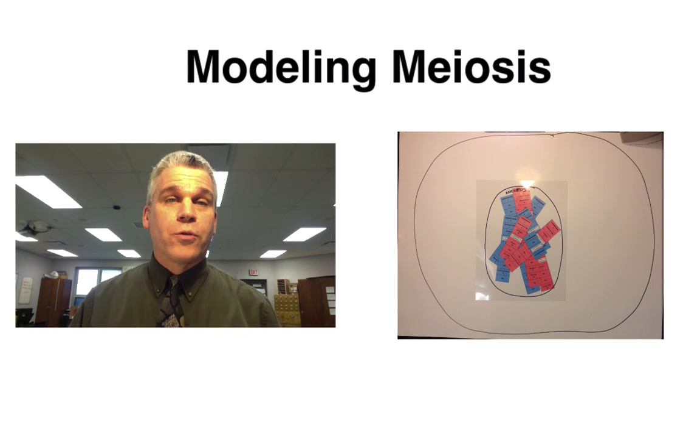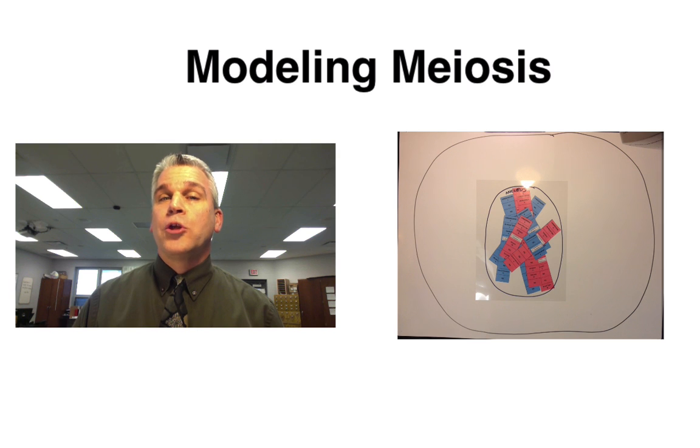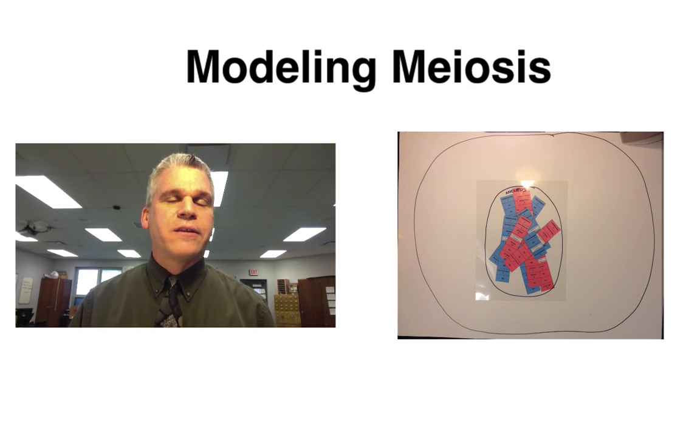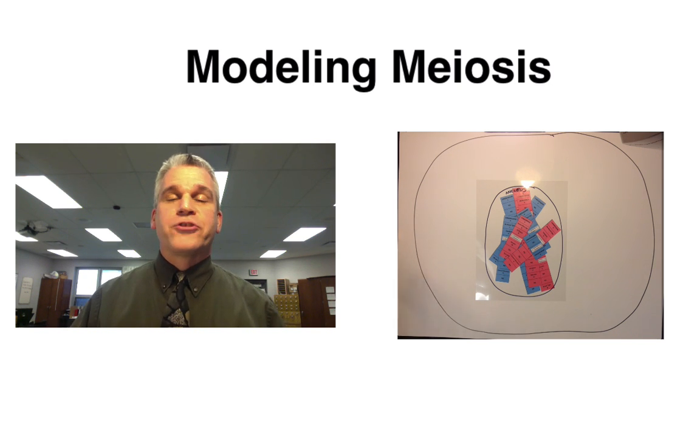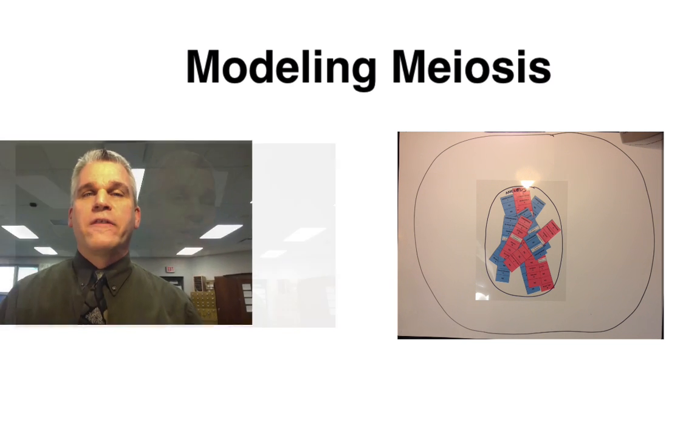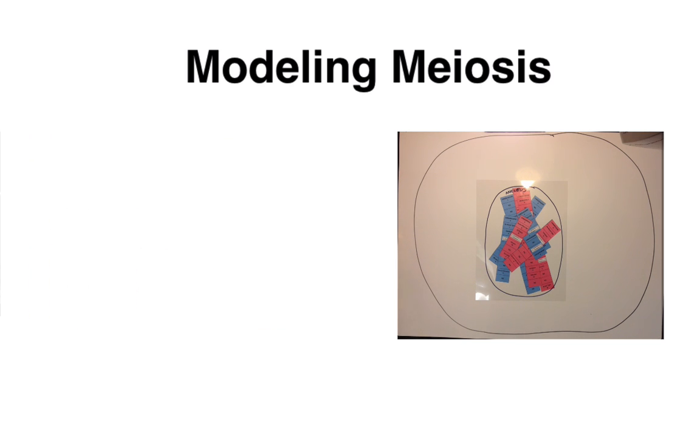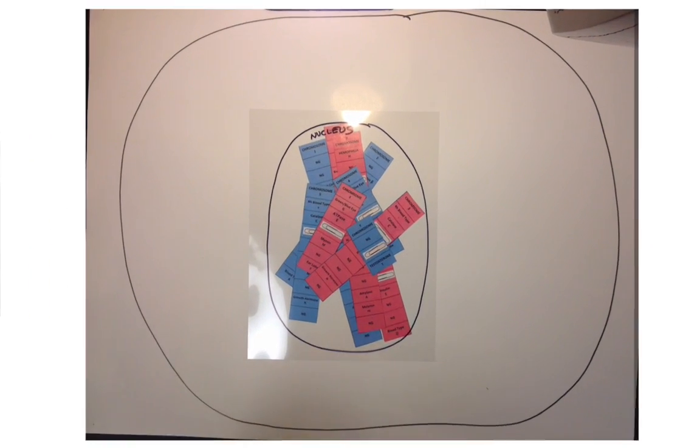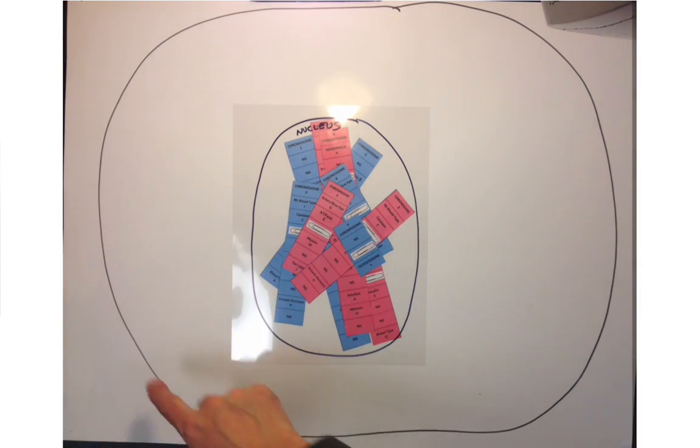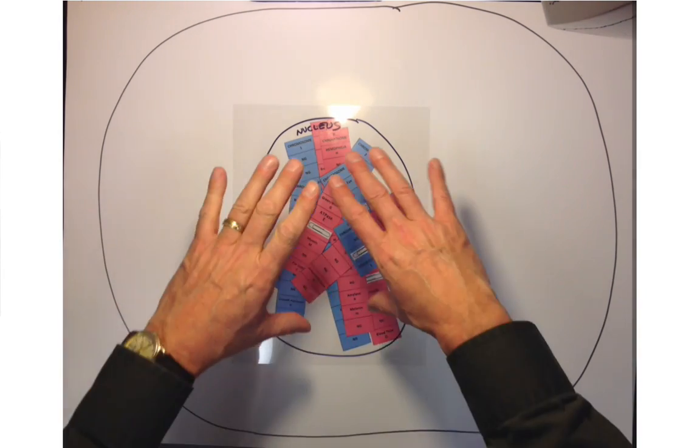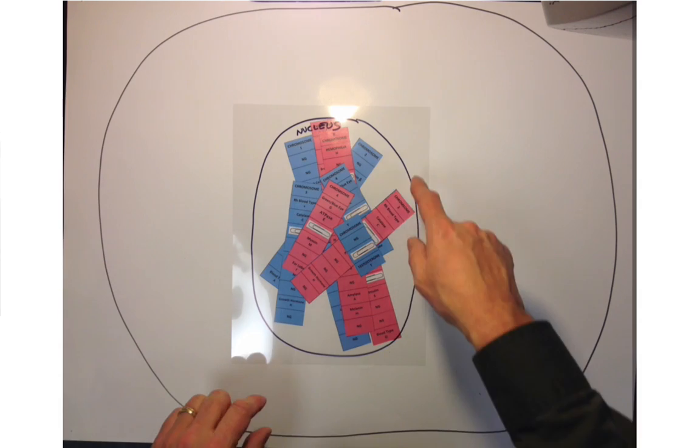You'll notice that some are blue and some are pink. These represent the blue ones coming from dad and the pink ones that came from mom. You'll put this on a big piece of poster paper with a circle around there that will represent your cell. On this poster paper, you can see the cell membrane. I've already cut out my chromosomes. Now you're not going to draw this circle in the middle.